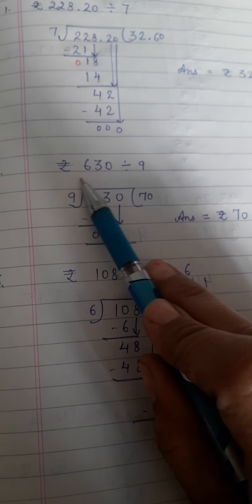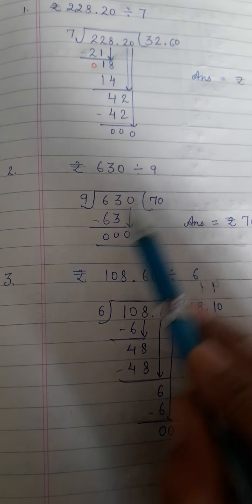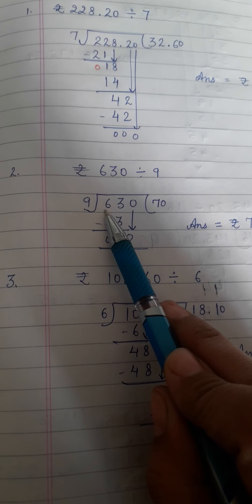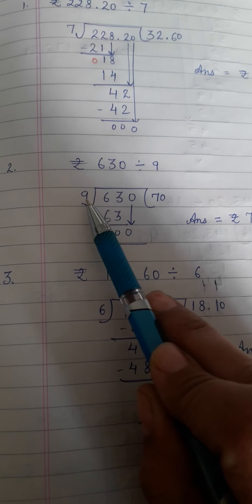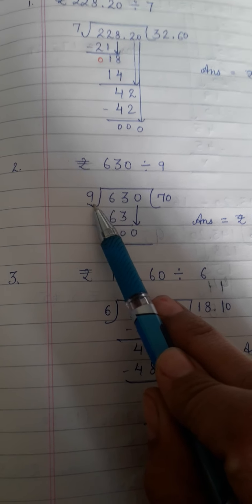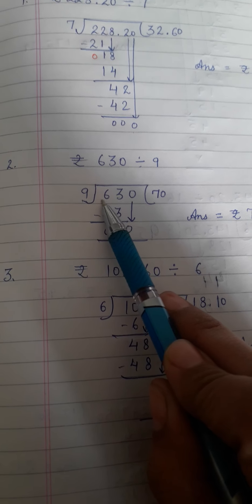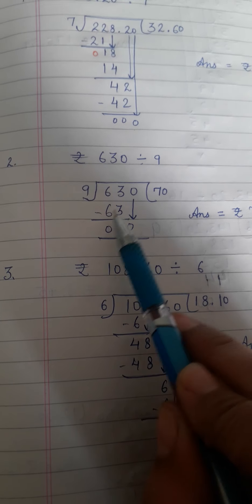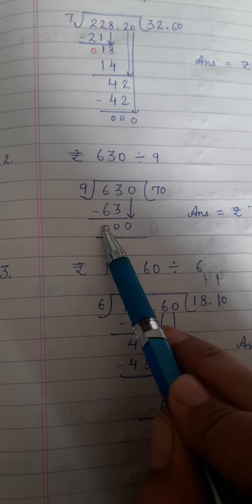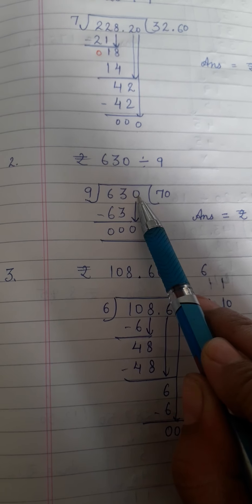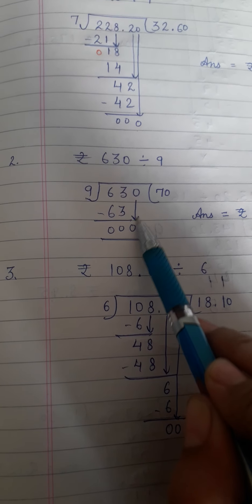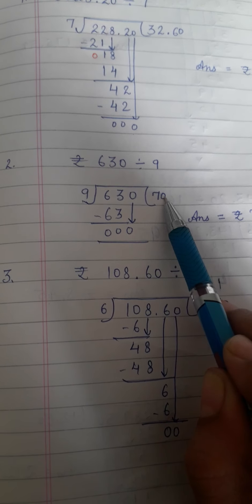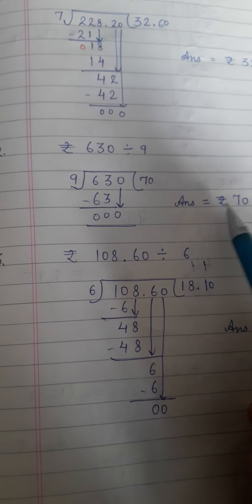Second question is rupees 6.30 divided by 9. You have to divide 6.30 by 9. First check first digit 6. 6 is smaller than 9. So you cannot divide 6 alone by 9. You will speak table for 2 digits. That is 63. 9 sevens are 63. Minus gives 00. Now we have 0 on top. Bring down 0. You cannot divide this. Put it as it is in the question. Your answer is rupees 70.